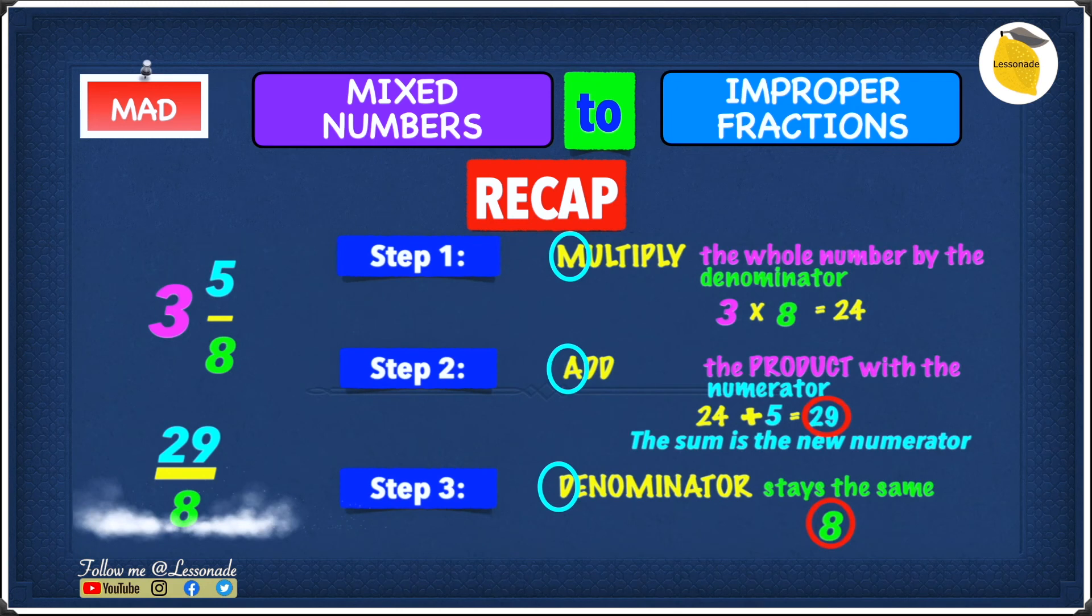Now, let's have a quick recap on what we learned. So when converting mixed numbers into improper fractions, step 1 is to multiply the whole number by the denominator, and then step 2 is to add the product with the numerator, and the sum you get is the numerator. And then the final step is the denominator stays the same.